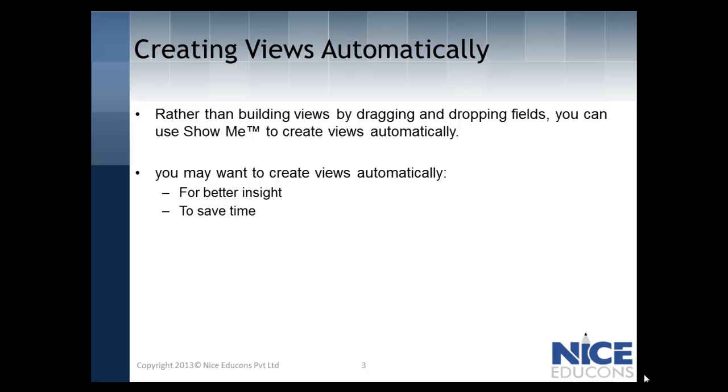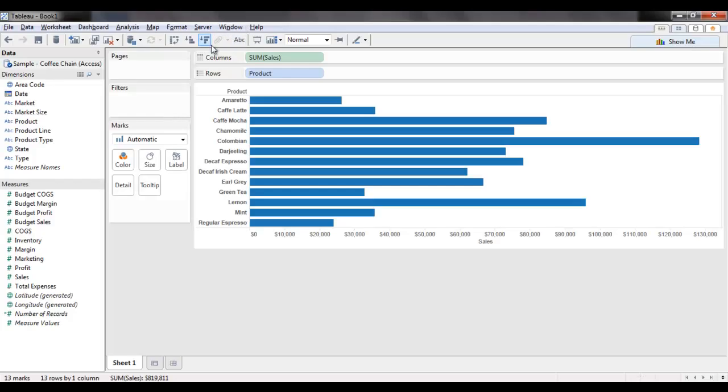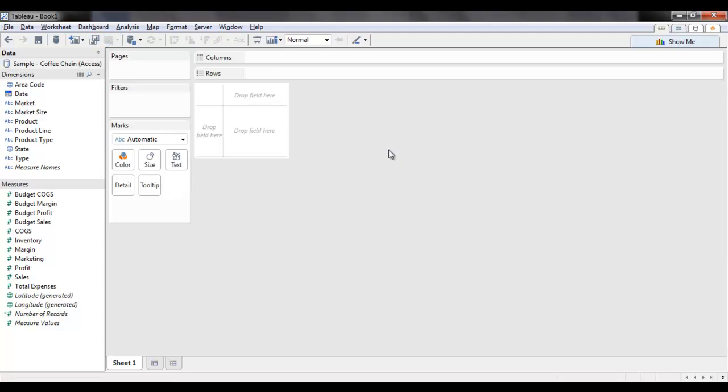Let us navigate back to the interface and see how this works. Let us clear this sheet first. To create views automatically, we'll first select the dimensions and measures of our interest. Let's say we select State and Sales Measure. We can select multiple fields by holding the Ctrl key. Now, let us click Show Me on the toolbar.